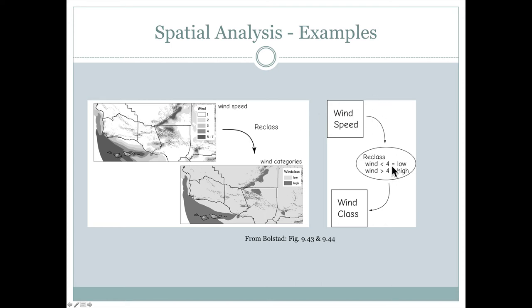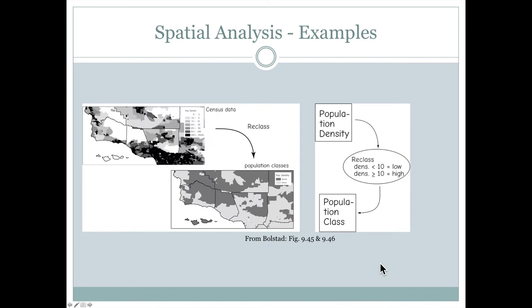So they've taken the wind speed, they've used a reclassification based on the value of four. Everything below four is going to be lowest wind speeds, everything above four is going to be high wind speeds. And now they have this new wind class here that's going to be one of the steps in the final analysis here.